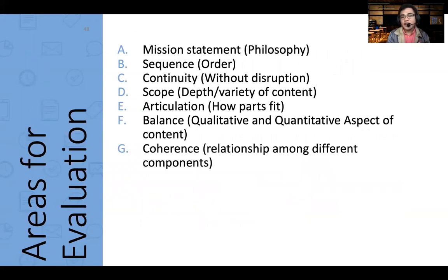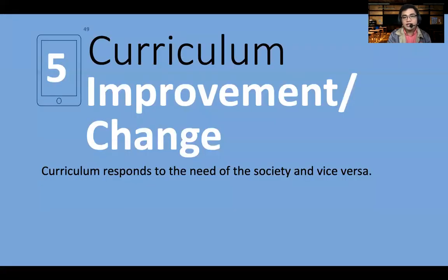Areas for evaluation include the mission statement, philosophy, sequence, continuity, scope, articulation, balance — covering qualitative and quantitative aspects of content — and coherence. That is also why we have accreditations for schools, to see if the school is still performing its part. After evaluation, the decision is whether the curriculum should change or improve, depending on what the review reveals.